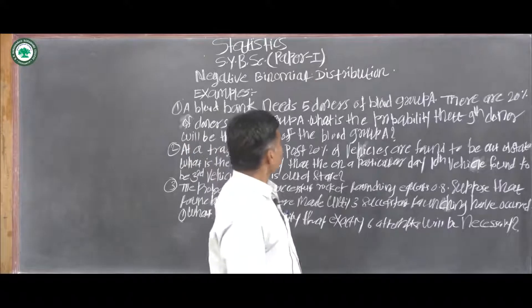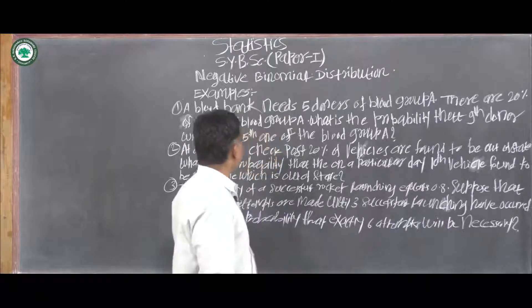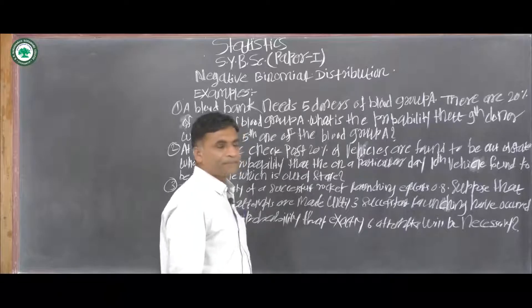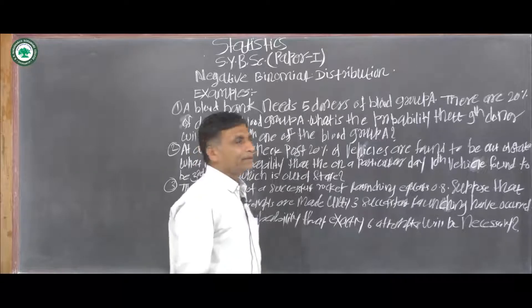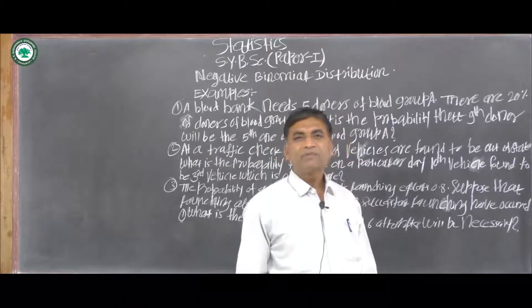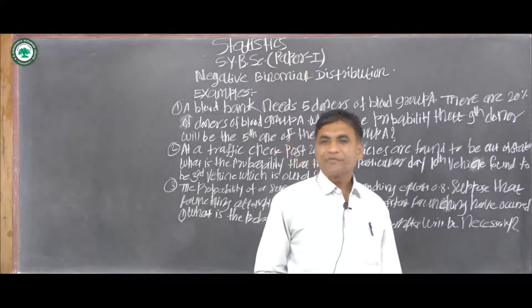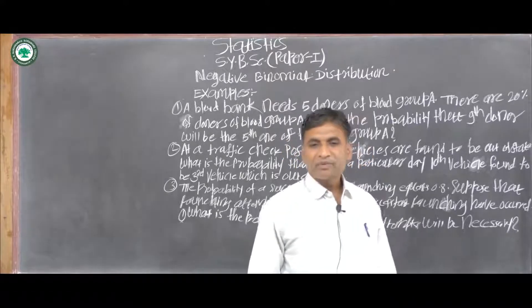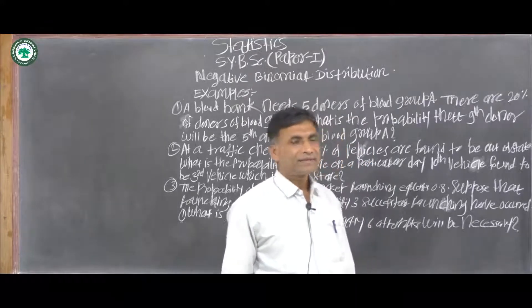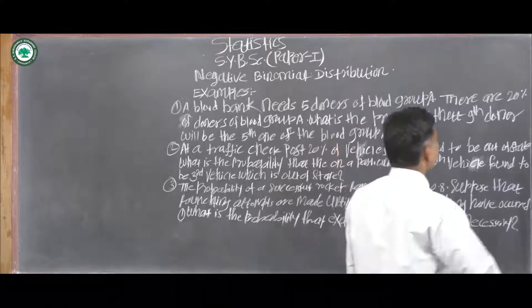By using the negative binomial distribution, we can find the probability. In the negative binomial distribution, the random variable X is the number of failures before getting the k-th success.